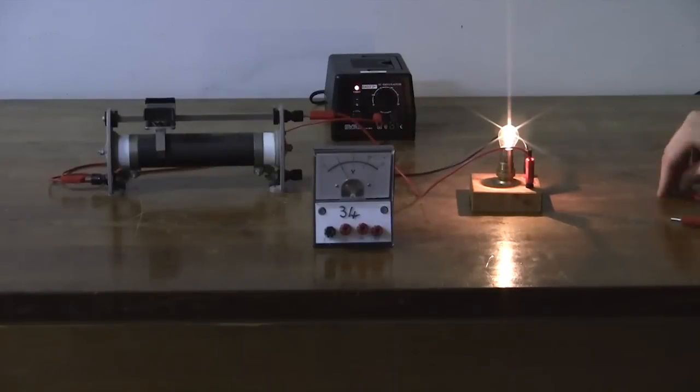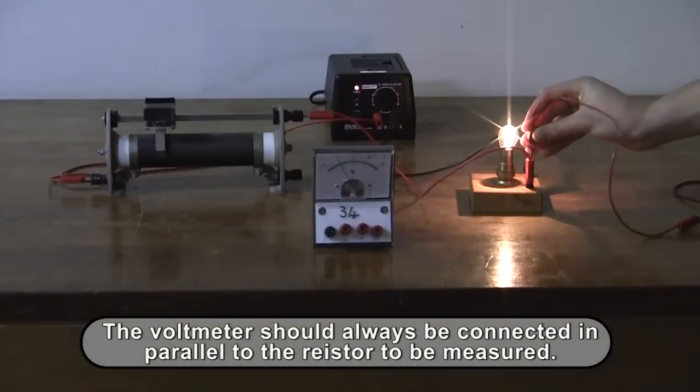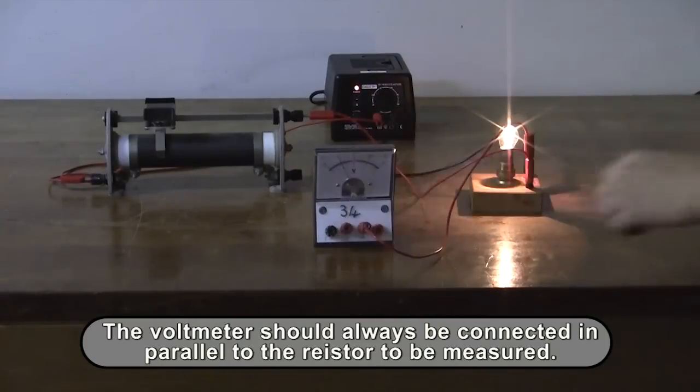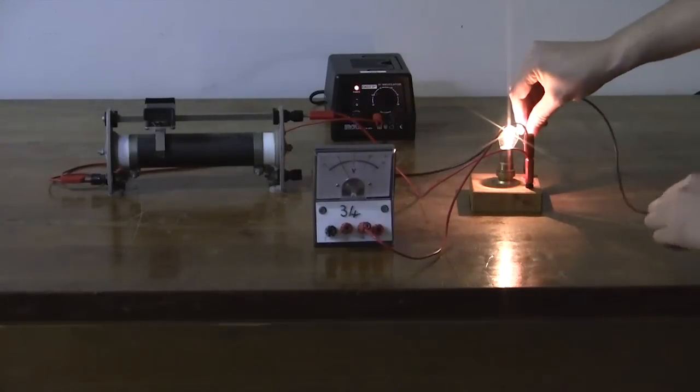The voltmeter should always be connected in parallel to the resistor to be measured. In this example, the source has a voltage between 3 and 15 volts, so we're going to use the middle positive terminal.